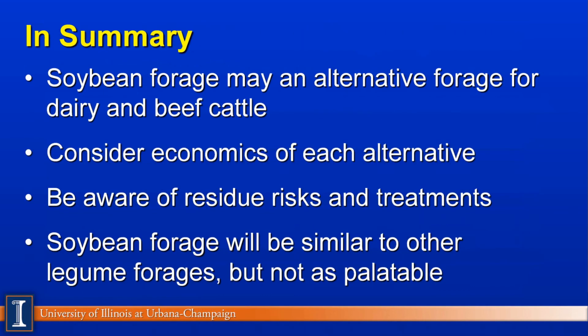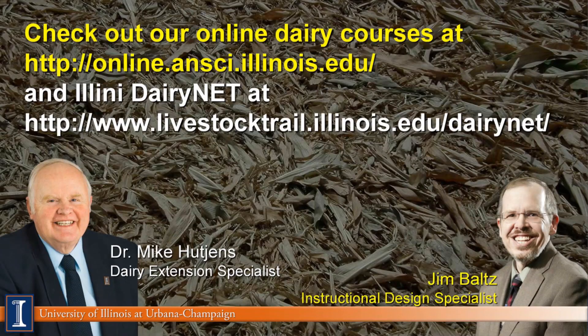In summary, soybeans may be a forage alternative on your farm, especially under drought conditions when you need forages and those soybeans are not going to make an economical yield. Economics will be a big factor when looking at these alternatives. Be aware of any residue risks and treatments to make sure we have no problems feeding it to livestock. Soybean forage will be similar to other legume forages, but it may not be quite as palatable. That completes our discussion for today. Check out our online dairy courses and visit Illinois DairyNet for other valuable information. Thanks, have a great day.